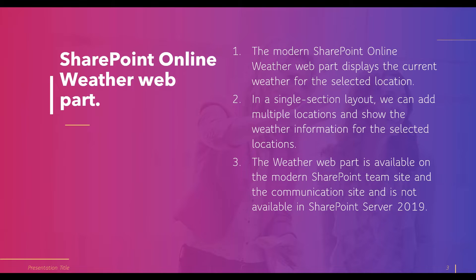The weather web part is used to display the current weather status for a selected location. It is also possible to add multiple locations and show weather information inside the weather web part. The weather web part is available in both the modern SharePoint team site and the communication site, but it is not available in SharePoint Server 2019.